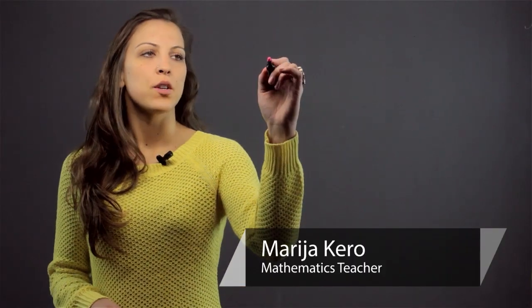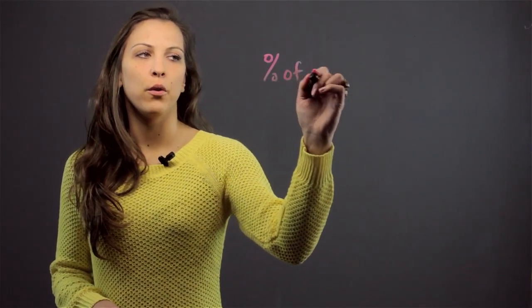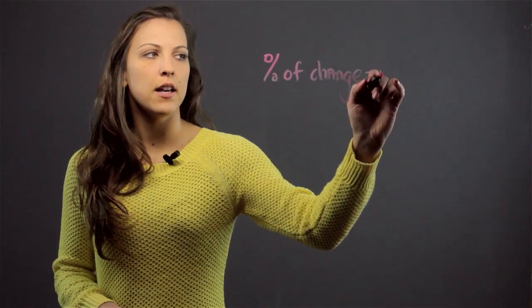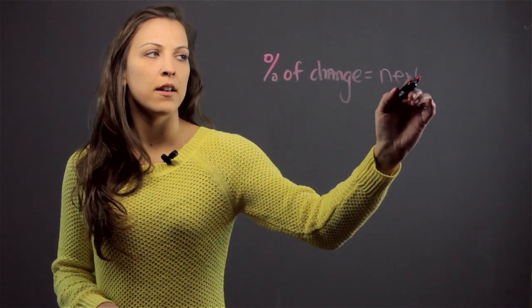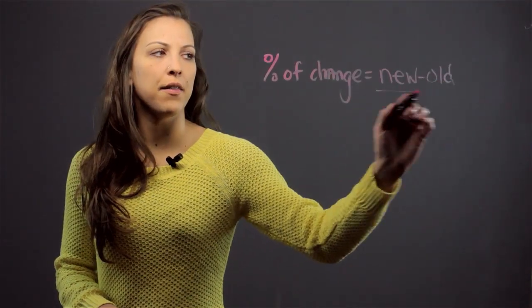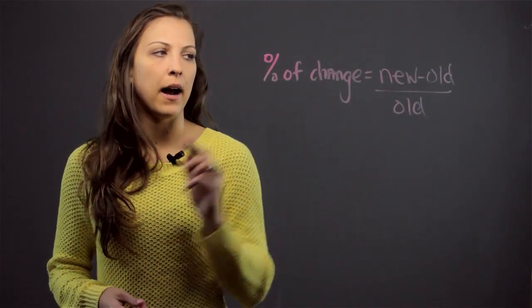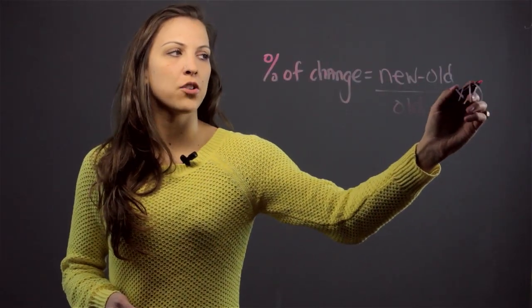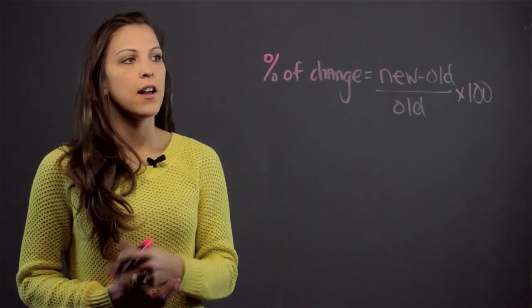And the formula is the same for both. So the way that we're going to find the percent of change, since we don't know if it's increase or decrease, is you're going to take the new value, subtract it from the old value, and then you're going to divide by the old value. And once you get this number, you're going to multiply it by 100 in order to make it into a percent.